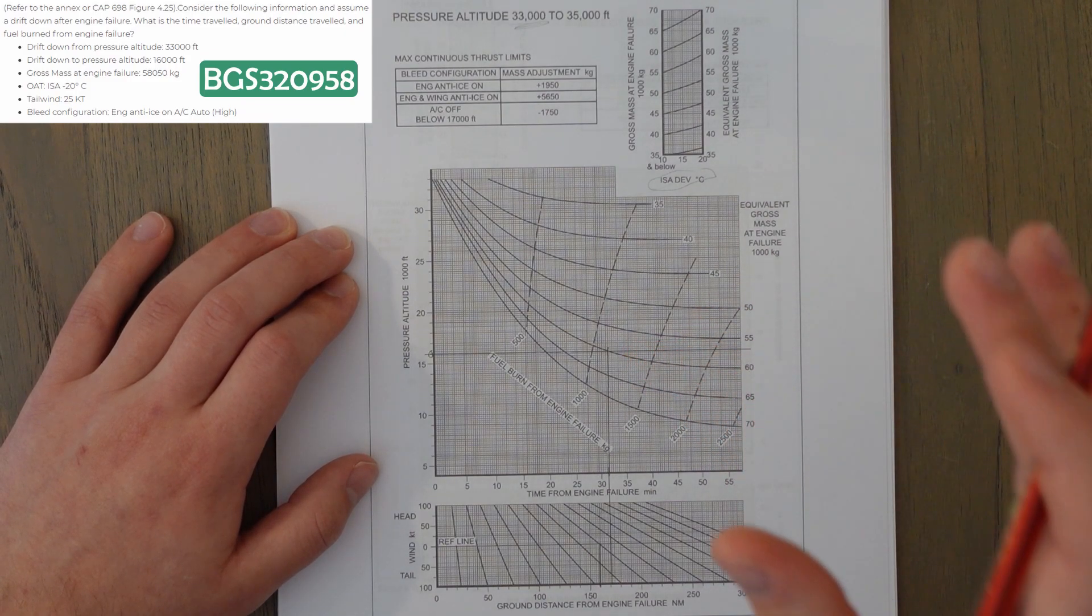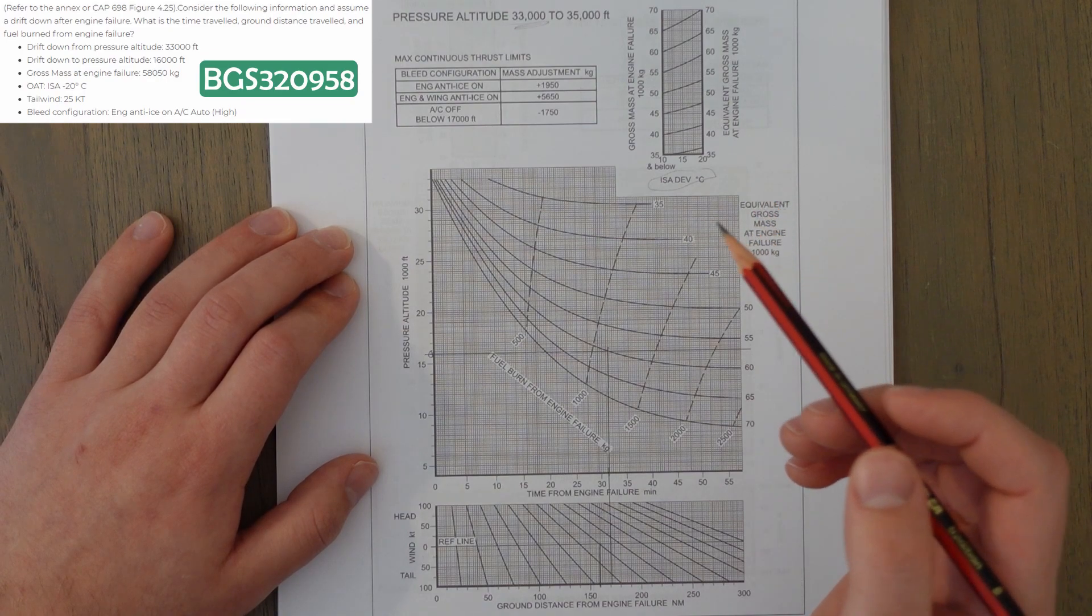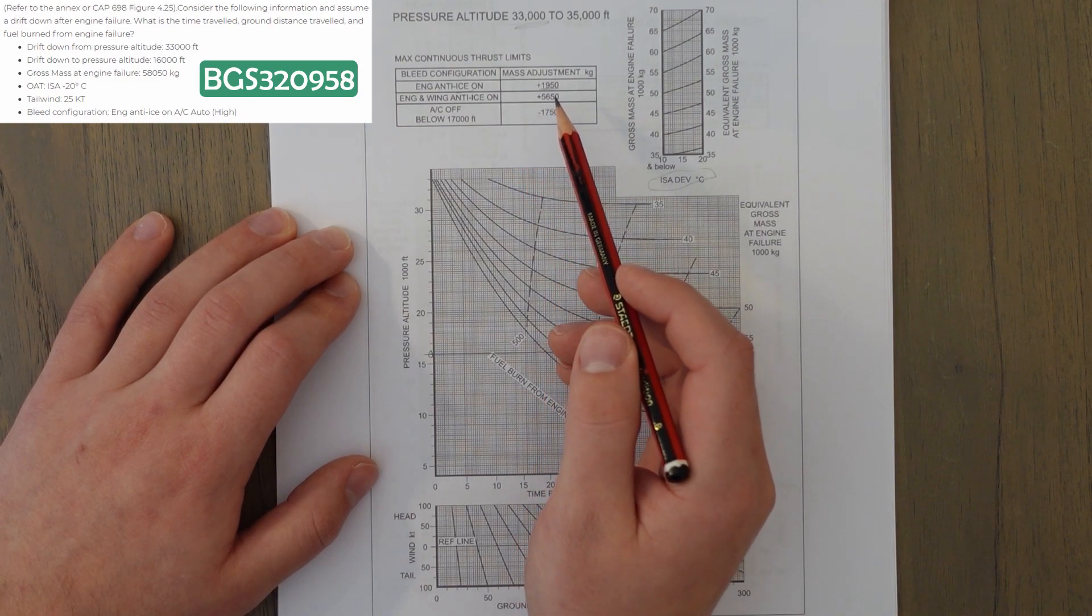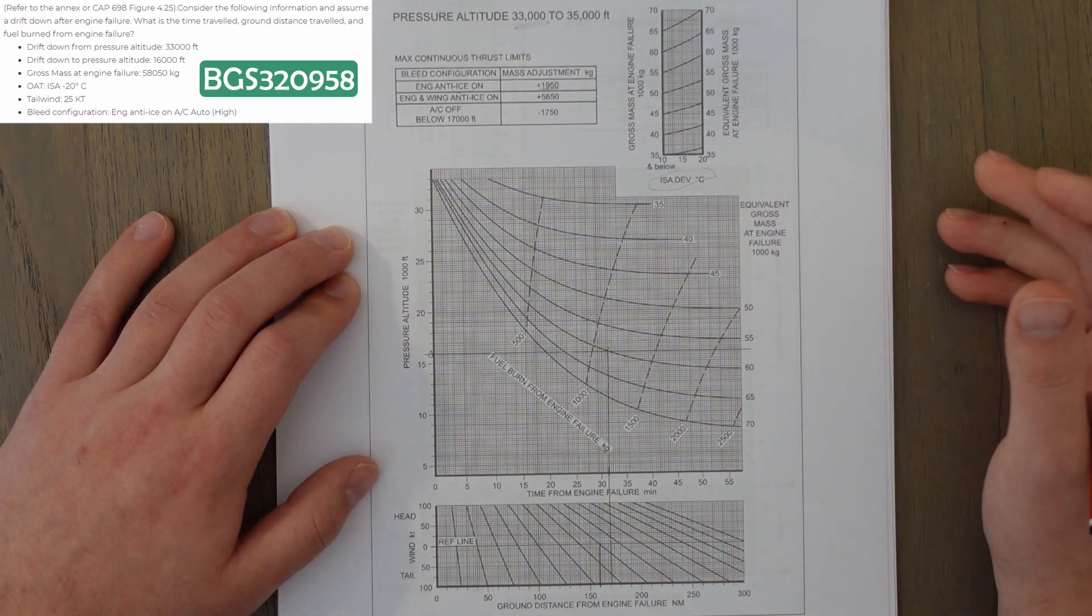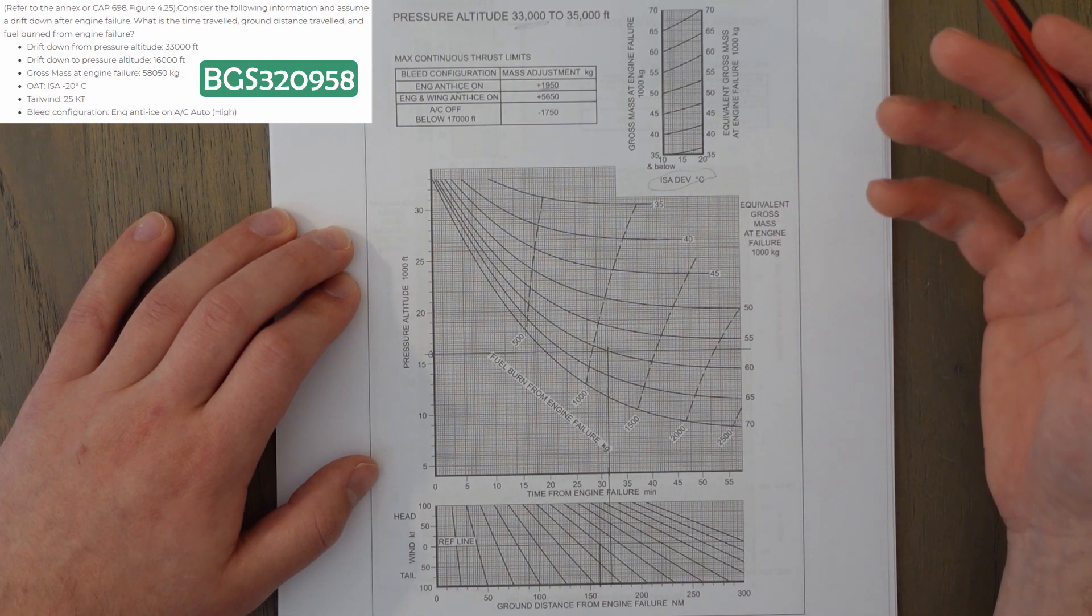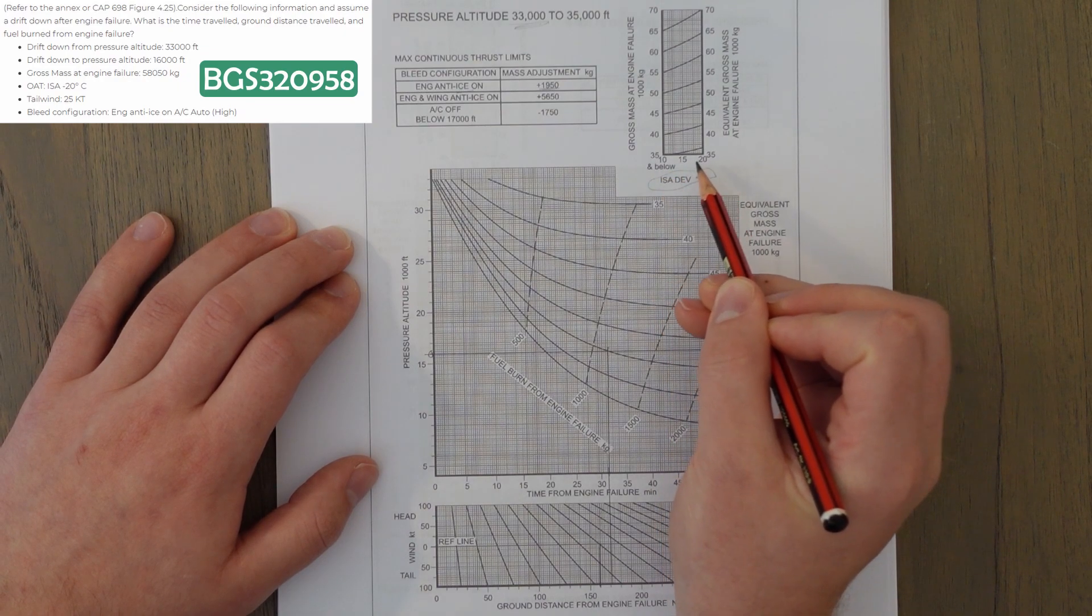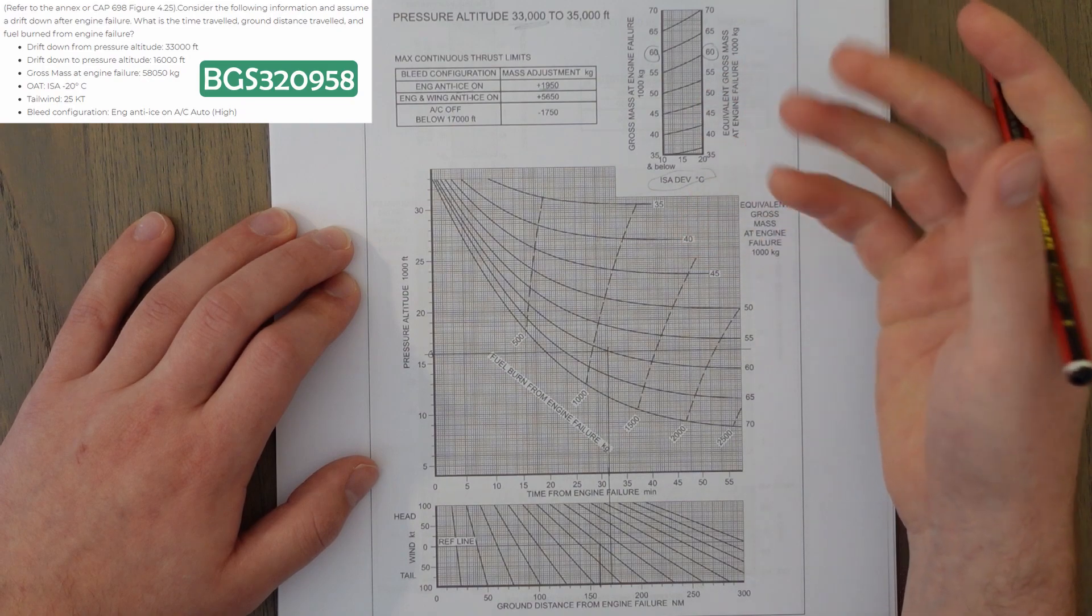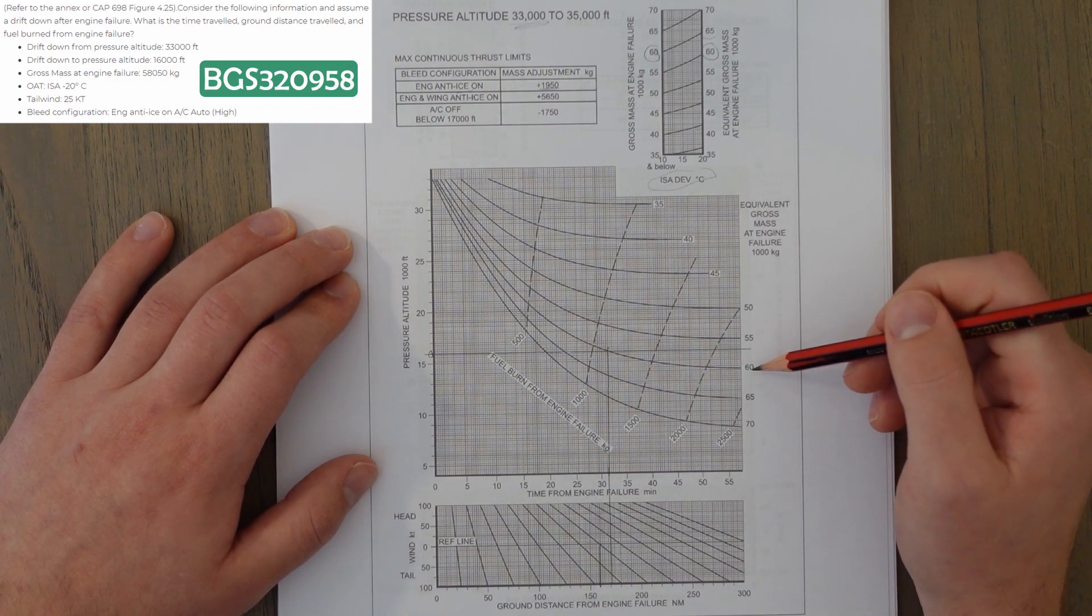But, remember, we need to look for little notes and corrections depending on our configuration. So, our configuration, we have the engine anti-ice on, which means we add 1,950 to our mass. So, we have a starting mass instead of 58,050, we have a starting mass of 60,000 exactly. Then, what we're going to do is we're going to go into this top right box and correct for any ISA deviation. The ISA deviation today is minus 20. So, this is 10 and below, this is 15, this is 20. That's all positive. So, we fall into this 10 and below category. So, our correction for 60,000 goes straight across and is 60,000. We don't actually have to correct, but if it was ISA plus 20, for instance, you would see we would correct basically all the way up to 65. So, we're looking at the 60,000 line, which is here. We're going to follow this guideline up to get to this point here and draw a line straight down.